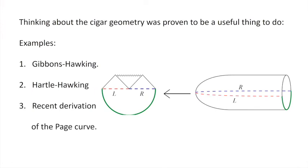Thinking about the cigar geometry has historically proven to be very useful when trying to understand black holes. The cigar geometry is what we get when we analytically continue the eternal black hole into Euclidean signature. It looks like a cylinder at infinity with a tip — in the Euclidean case it's a point, but when you analytically continue back to Lorentzian signature, that point becomes the horizon.